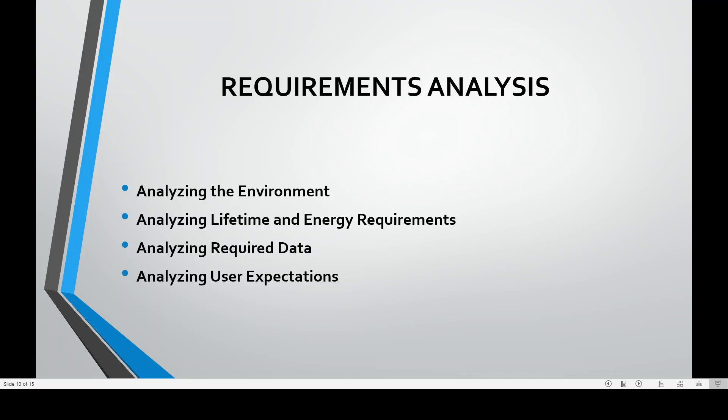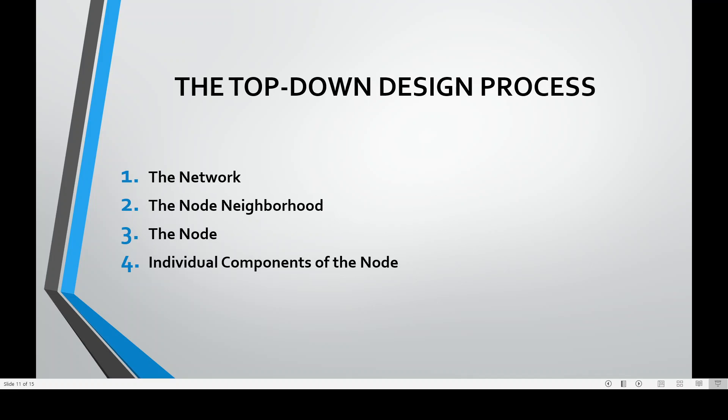For the requirement analysis, we analyze the environment, the lifetime and energy requirements, the required data, and the user's expectations. We then go for the top-down design process: first the network, then the node neighborhood, then the node, and finally the individual components of the node.